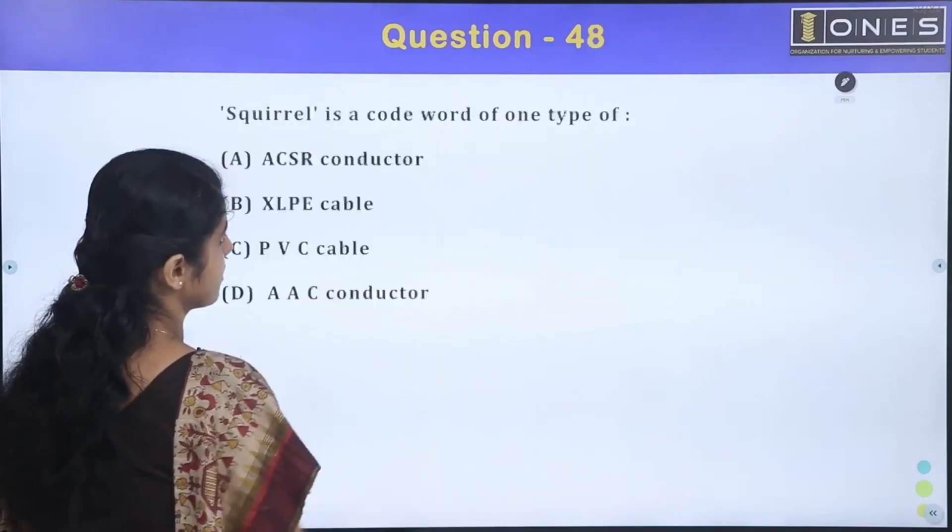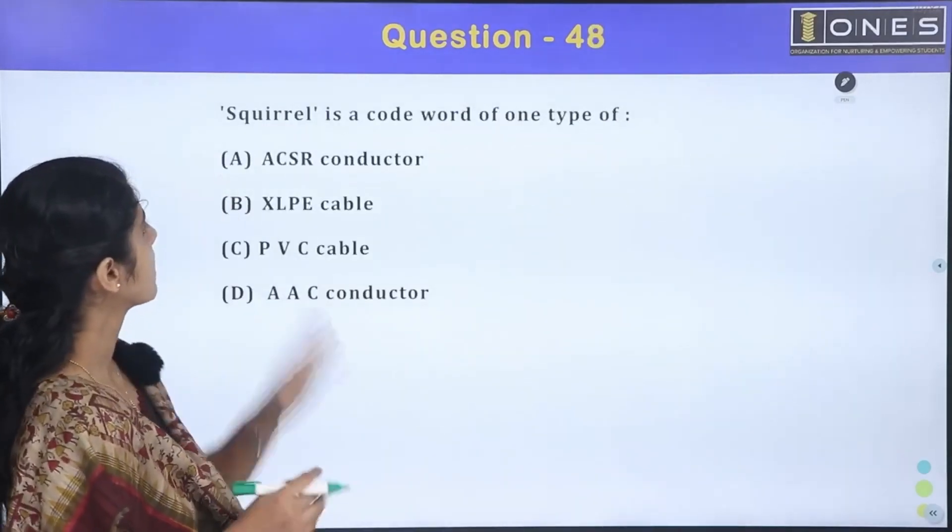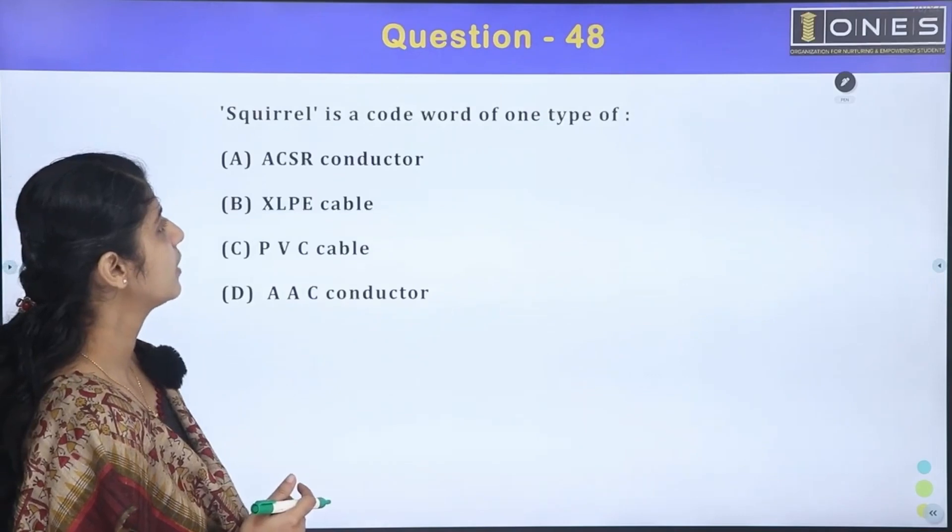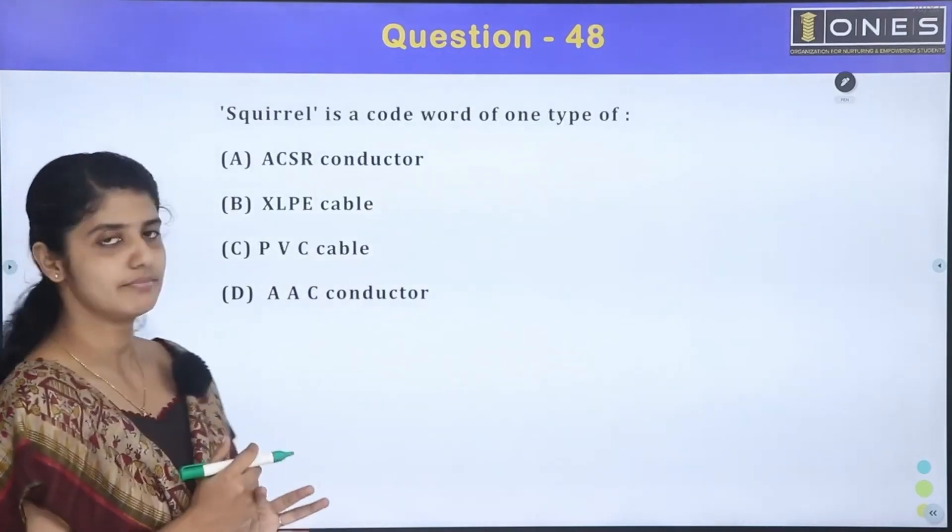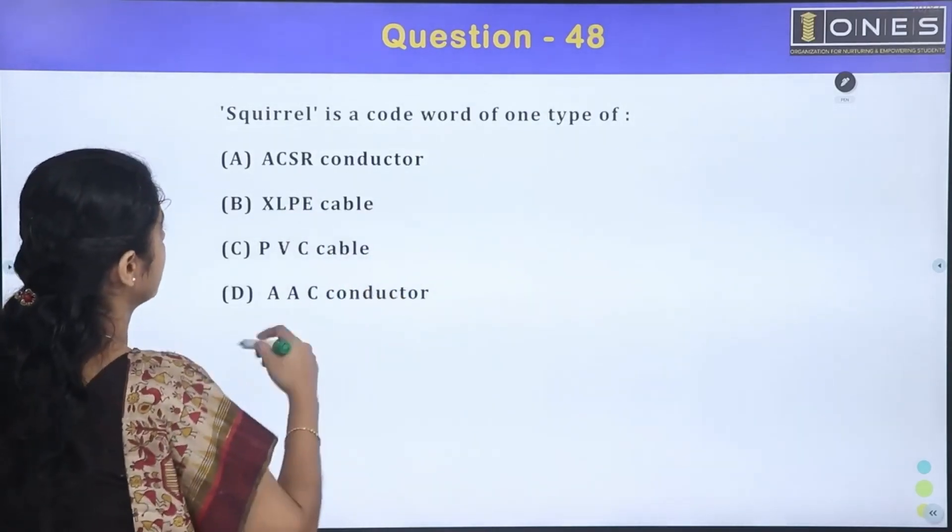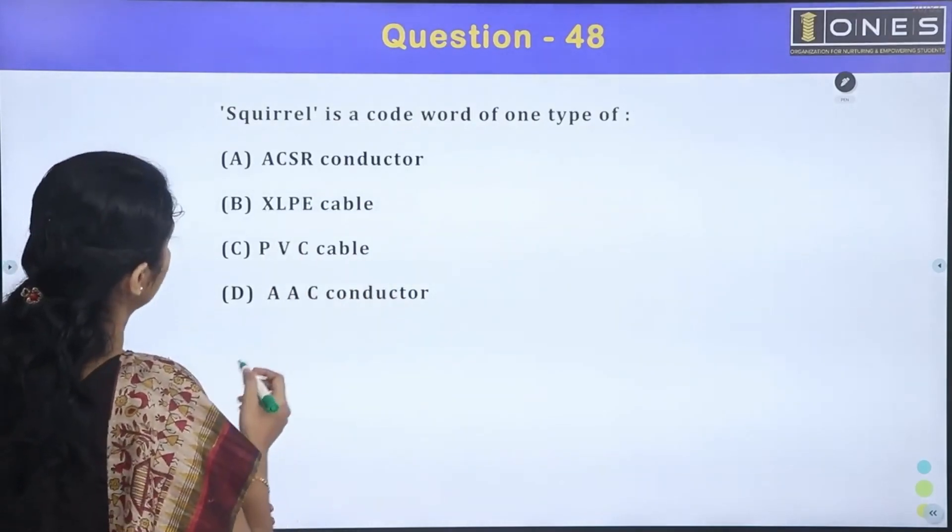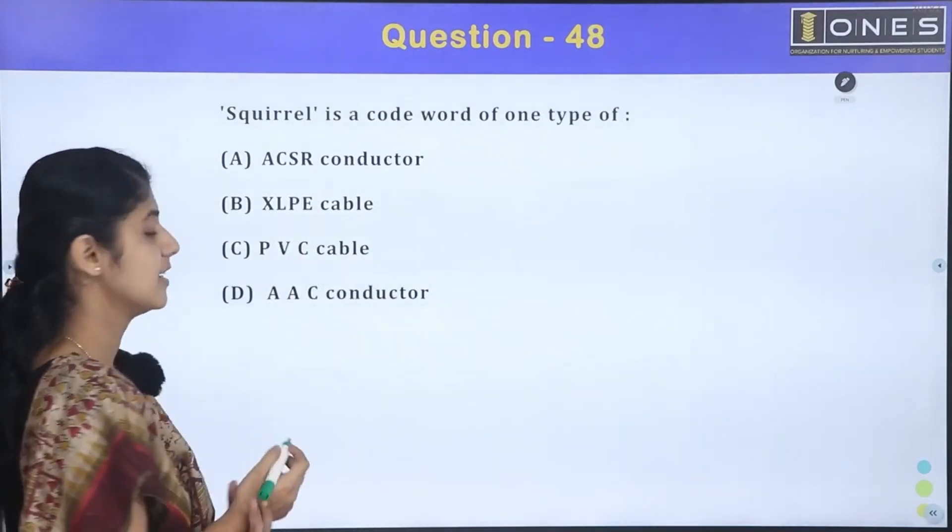For the note here. Next question, 48th question. Squirrel is a code word of one type of. Options will come: ACSR conductor, XLPE cable, PVC cable, AAC conductor. What is it? Squirrel.